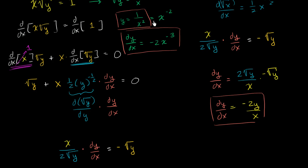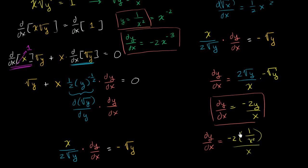So if we substitute y is equal to 1 over x squared, we get dy/dx is equal to negative 2 times 1 over x squared, all over x, which is equal to negative 2 over x to the third — which is exactly negative 2 x to the negative third power, the same result we got before.